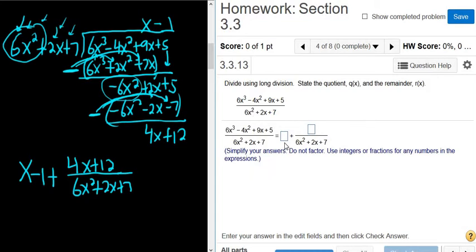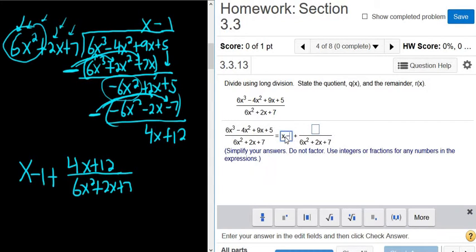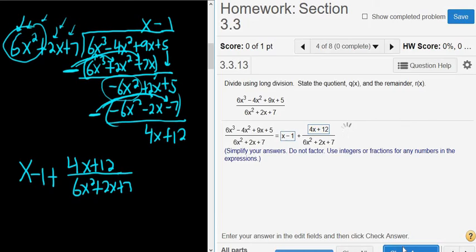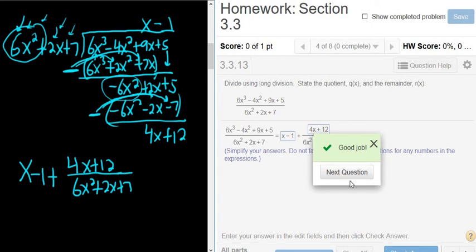I'll type it in: the quotient is x - 1, and the remainder is 4x + 12. They wrote the divisor for us. Moment of truth... Yay! Got it right. I hope that made sense.